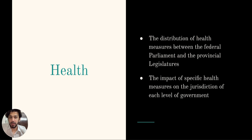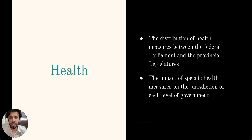This power is primarily held by the federal government as outlined in Section 91(27) of the Constitution Act 1867. However, the provinces have jurisdiction over public health matters within their borders, including the power to establish and enforce public health regulations, such as quarantine measures and mandatory vaccinations, as outlined under Section 92(7) of the Constitution Act.